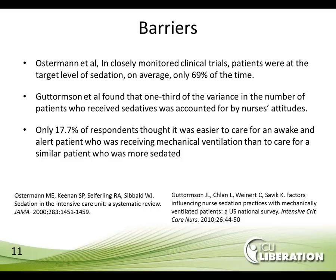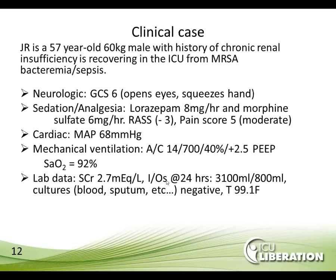Back to you, Michael. Thank you, Ken. Let's take a look at our clinical case — a typical patient you may have in your ICU. GR is a 57-year-old, 60-kilogram male with history of chronic renal insufficiency recovering in the ICU from MRSA bacteremia and sepsis. Neurologically, the patient has a Glasgow Coma Score of 6, where he only opens his eyes and squeezes hands upon request.